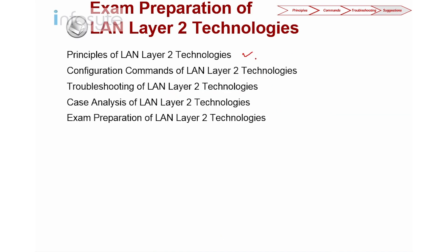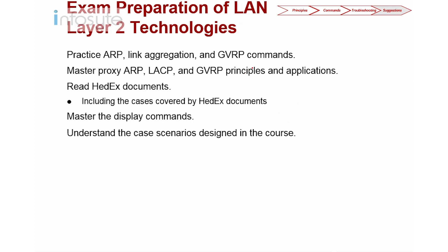These are the common Layer 2 troubleshooting areas you need to know for the exam. Know your Layer 2 properly: ARP, MAC address, flapping, proxy ARP, port security — all are important. Know your configuration very well and understand the technology so you understand the troubleshooting. Practice Layer 2: ARP, link aggregation, GVRP. Understand proxy ARP, LACP, and GVRP. If in doubt, always visit the HedEx for examples. Hope you enjoyed this session on Layer 2 — see you again, thank you.